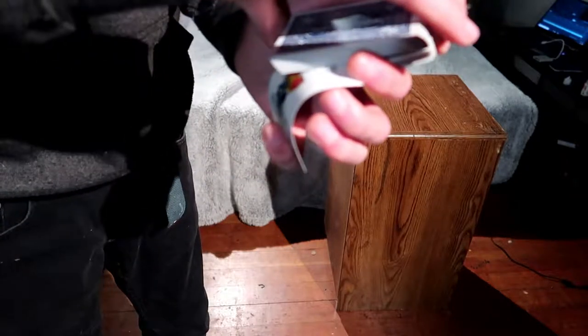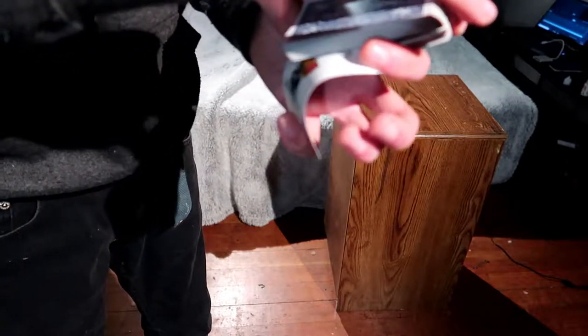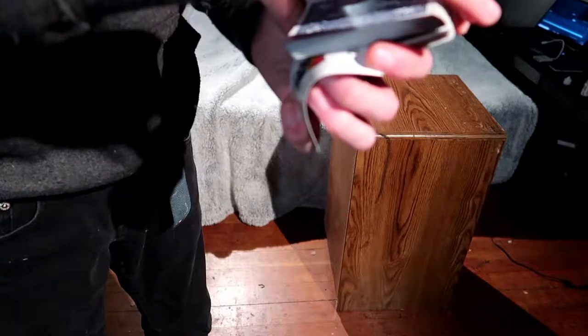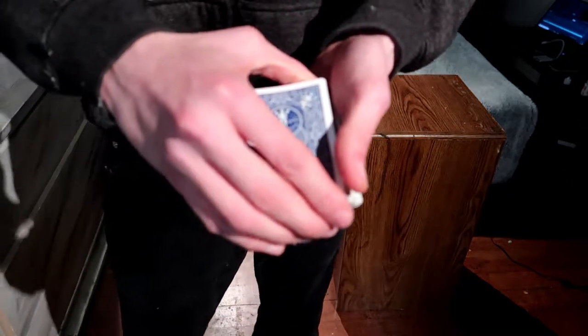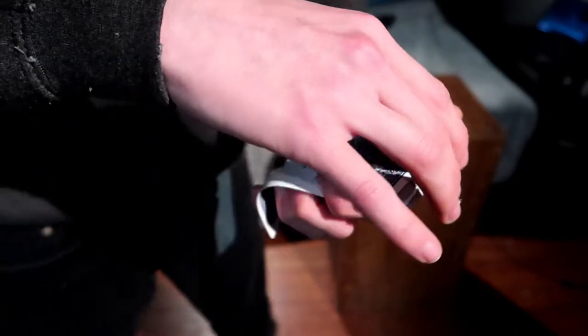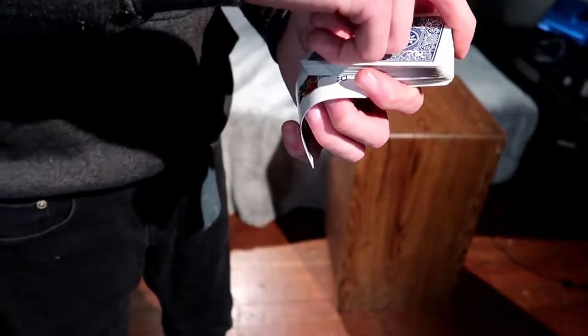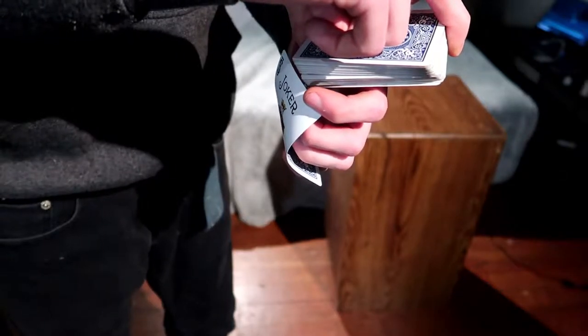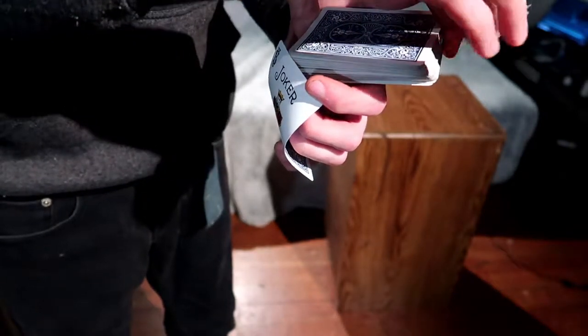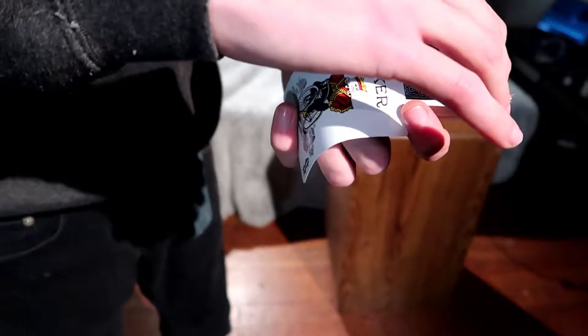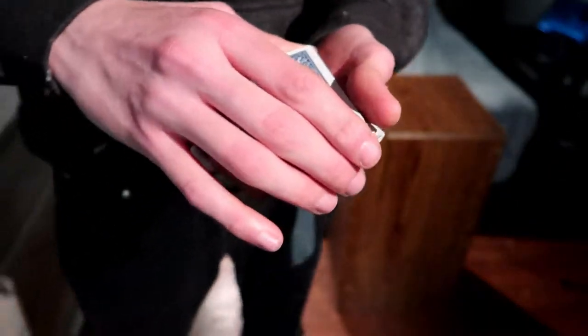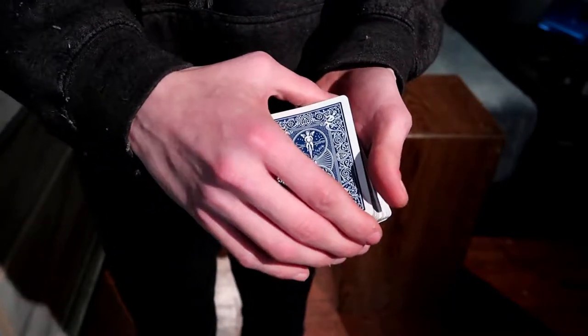And then from here, you are going to bend the card like this. And while you're bending the card like this, these two fingers, the ring and the middle, are going to go under the card. And this is all with the cover of this hand. So you're going to bend it, and you're going to pull it out like this. And then it's going to come out, and you're going to bring it to the top of the deck like that.